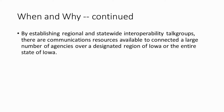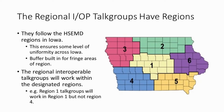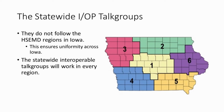The regional interoperability talk groups have set regions for their use. The talk groups align with the Iowa Homeland Security regions to create uniformity and consistency across the state. There is a buffer built into the fringe areas of each region, meaning that Region 1 talk groups will work within HSEMD Region 1 and one ring of counties around it. The statewide interoperability talk groups will work statewide and are not bounded by Homeland Security region.